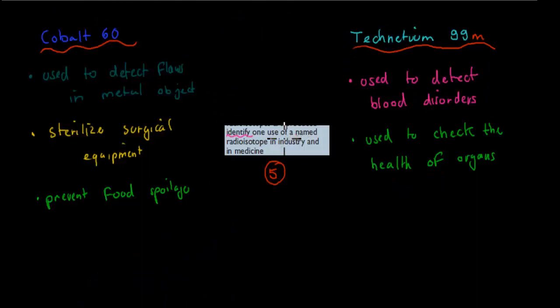Here we have identify one use of a named radioisotope in industry and medicine. Here I've got the named isotopes. I've actually given you a couple more than one use. Cobalt-60 is used to detect flaws in metal objects, also to sterilize surgical equipment and to prevent food spoilage. Technetium-99 is used to detect blood disorders and used to check the health of organs. These were the named radioisotopes and their uses.